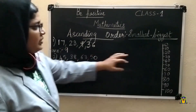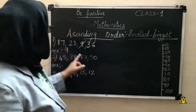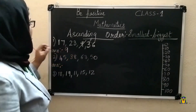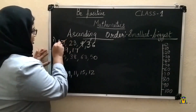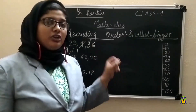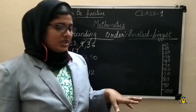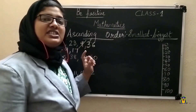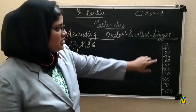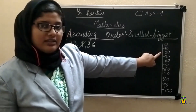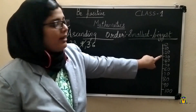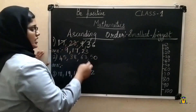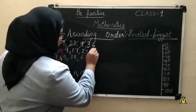Then in the range 10 to 20, is any number there? Yes, it is 17. So we write 17 next and cross it out. After writing the number, you have to cross it, otherwise it will cause confusion. The remaining numbers are 23 and 36. In the range 20 to 30 we have 23, so we write 23 and cross it. Then the remaining number is 36.